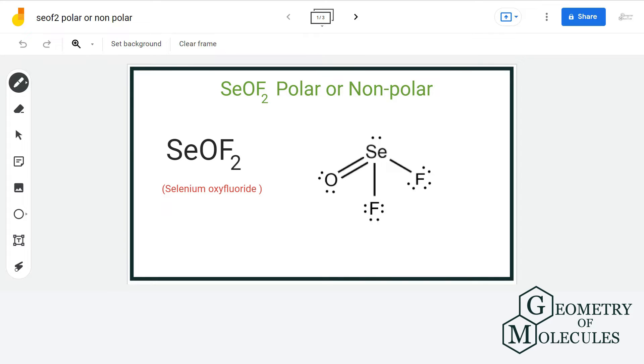So, the electronegativity value of fluorine is 4, for oxygen it is 3.44, and for selenium it is 2.55. If you calculate the difference, it is more than 0.4 which makes both the bonds, i.e. selenium-oxygen and selenium-fluorine bonds, polar.